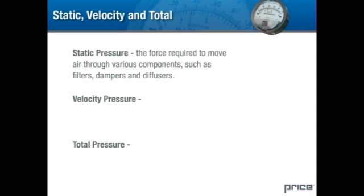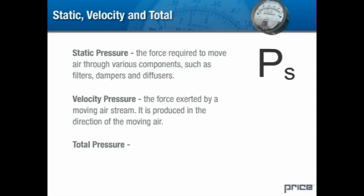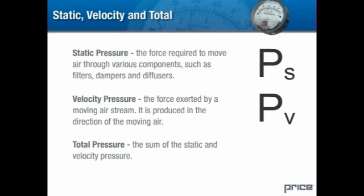Static pressure in an HVAC system is the force required to move air through various components such as filters, dampers, and diffusers. Static pressure is exerted equally in all directions. When we deal with pressure in tables and equations, we often use the notation P sub S to stand for static pressure. Velocity pressure is the force exerted by a moving air stream; it is produced in the direction of the moving air, denoted P sub V. Total pressure is the sum of static and velocity pressure, denoted P sub T.